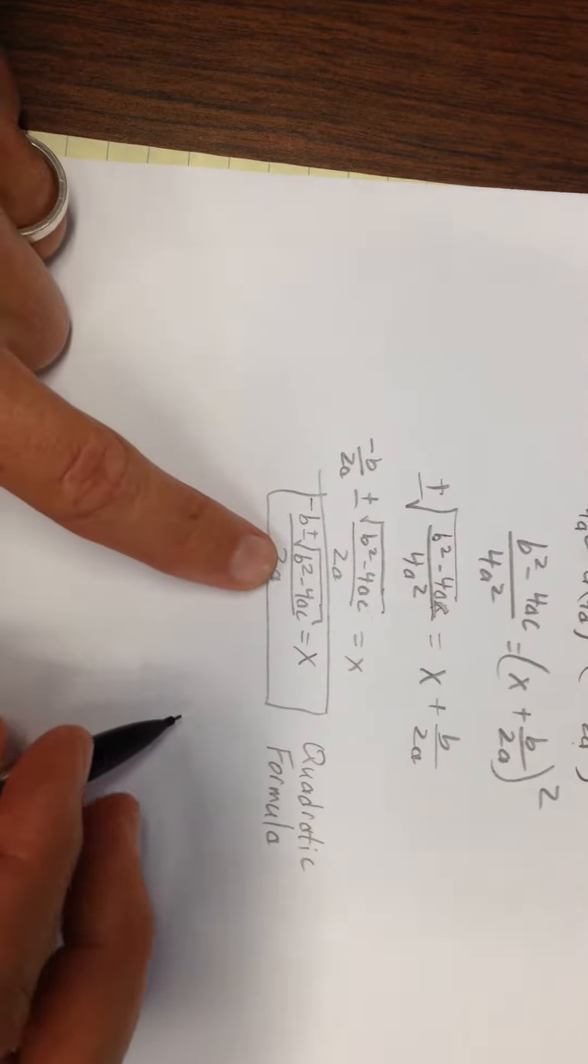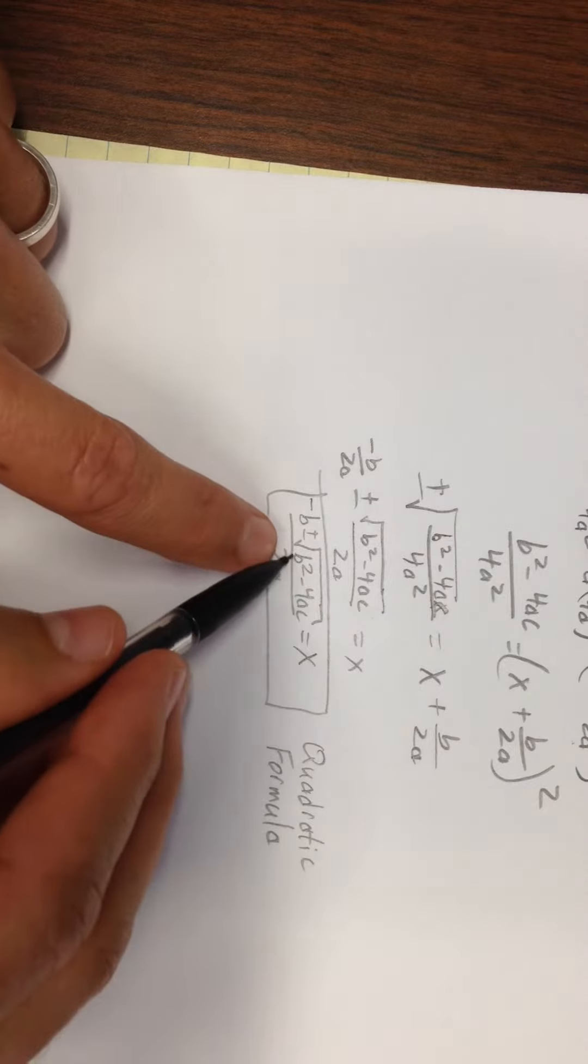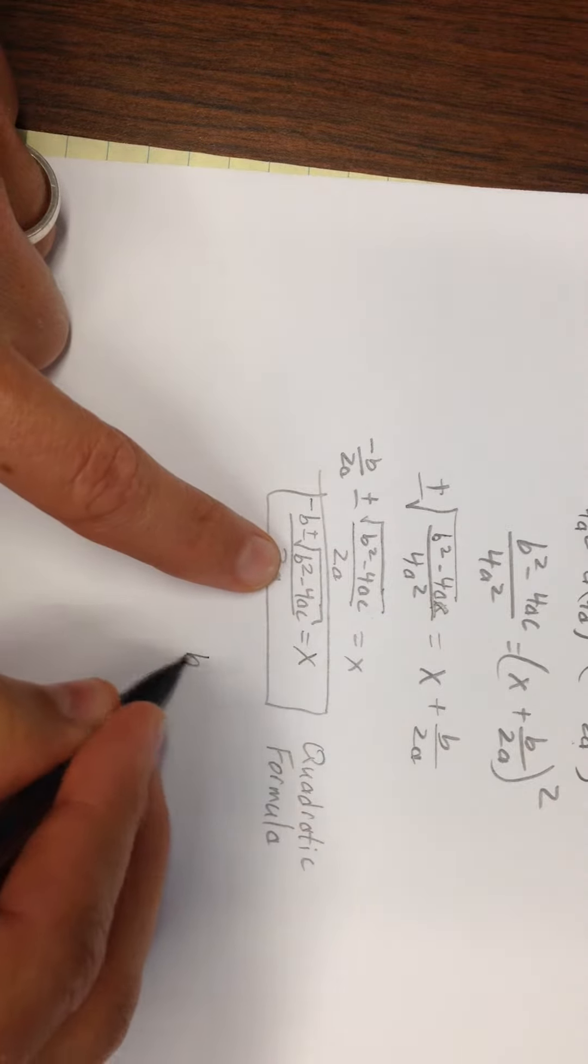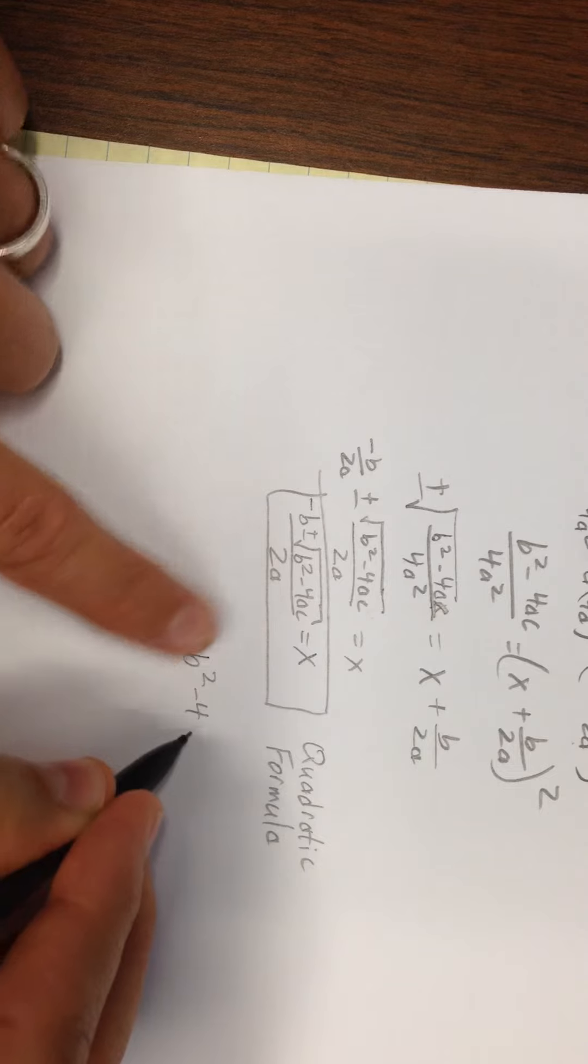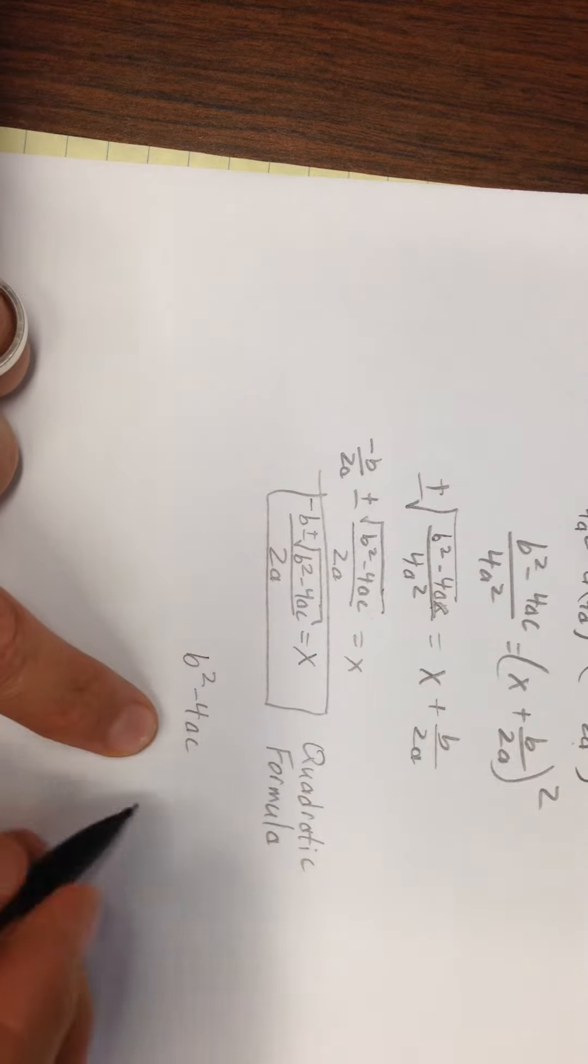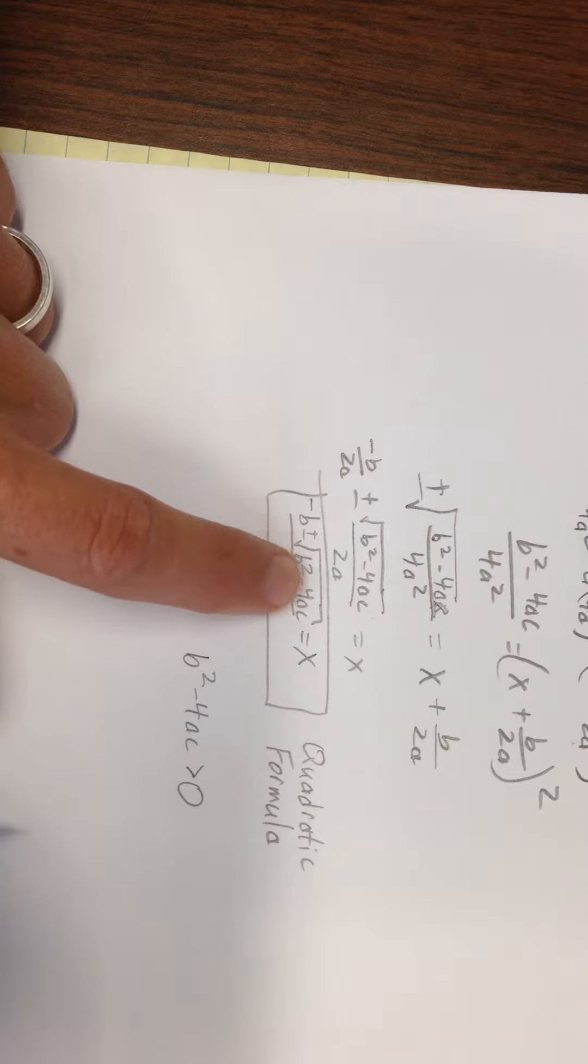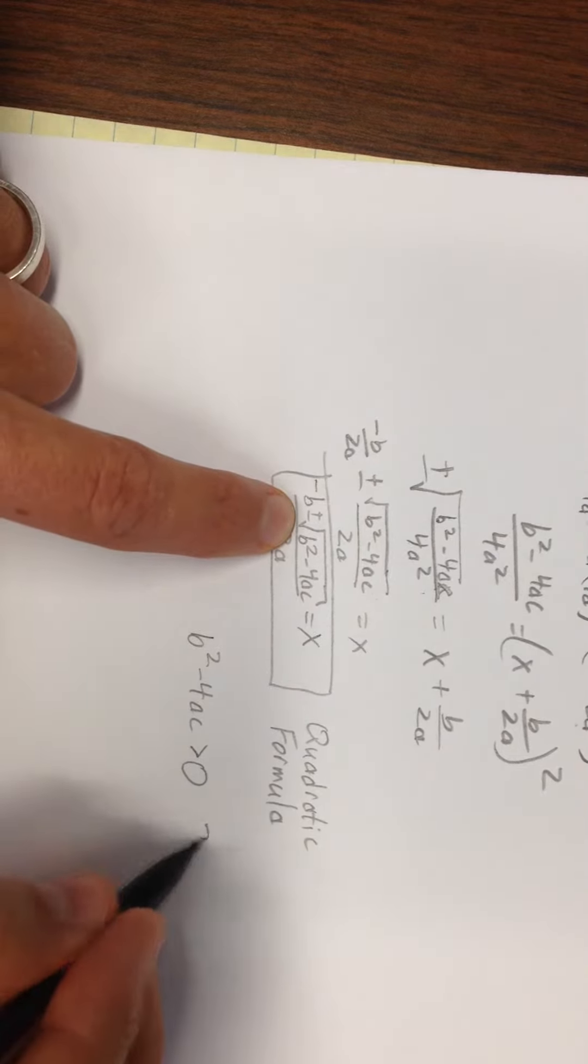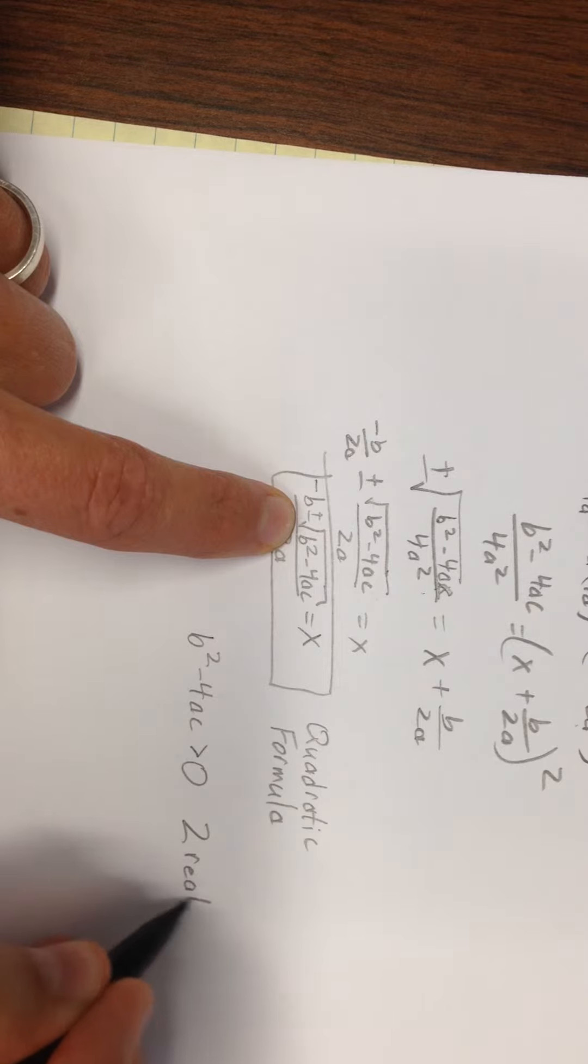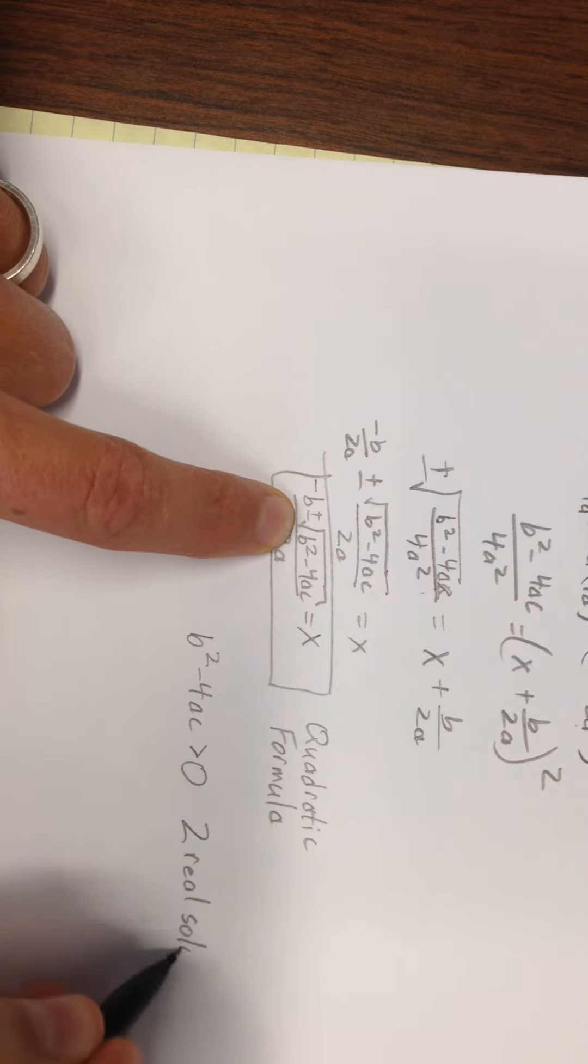And the interesting thing about that is I can sort of tell you what that is using this term under the square root, b² - 4ac. If that term is greater than 0, can you see that I'm going to get the square root of a positive number added and subtracted? That's going to give me two real solutions.